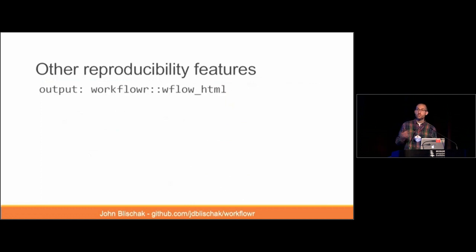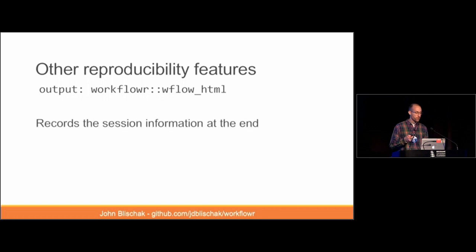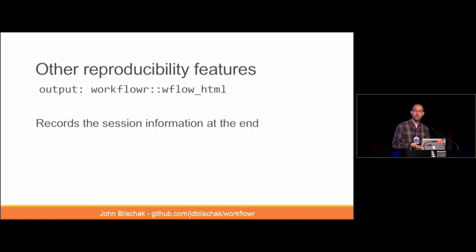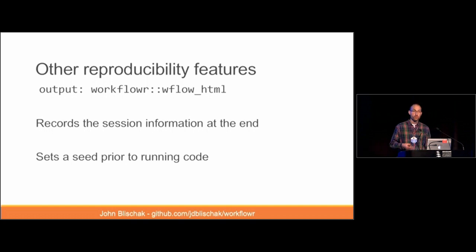WorkflowR inserts all those links to past versions using a custom output format called workflowr_html, which extends the standard HTML document format from the R Markdown package. It also records and inserts session information at the end of every analysis automatically, so whenever you look at results you know the exact operating system, R version, and package versions that generated them. It also sets a seed prior to running the code in each analysis, so that if any results rely on a random process, they will still be reproducible when someone else runs them.